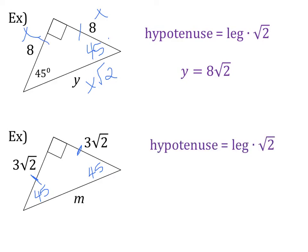And so hypotenuse equals leg root 2, I just need to plug in the pieces. My hypotenuse is m, and my leg is 3 root 2. So m equals 3 root 2 times root 2.